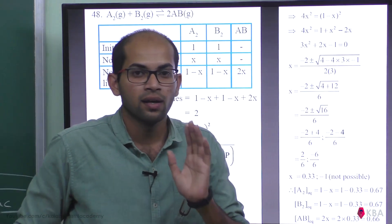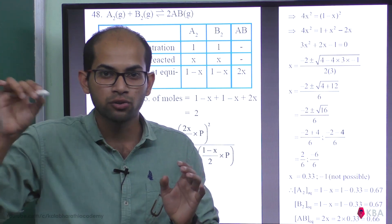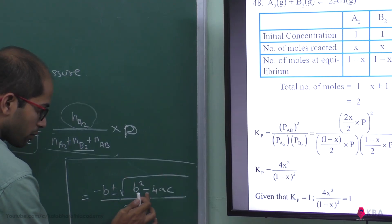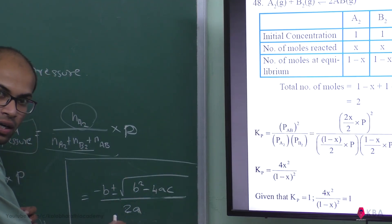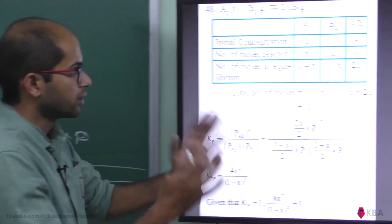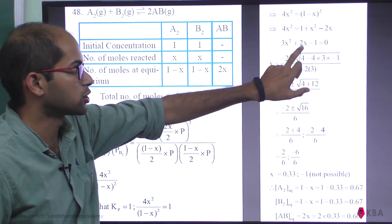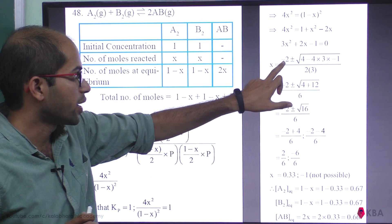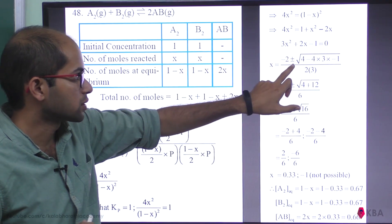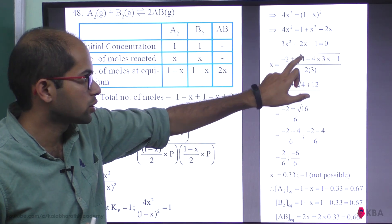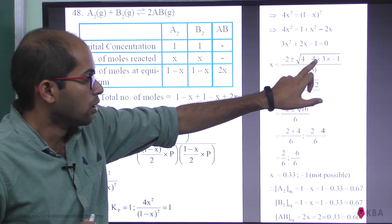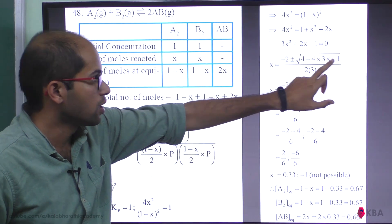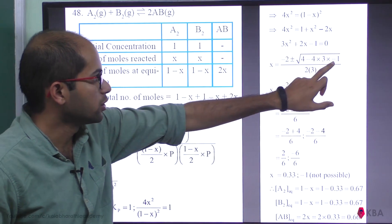Using the quadratic formula: x equals minus b plus or minus square root of (b² minus 4ac), divided by 2a. Here a is 3, b is plus 2, c is minus 1. So we get minus 2 plus or minus square root of (4 minus 4 times 3 times minus 1), divided by 6.